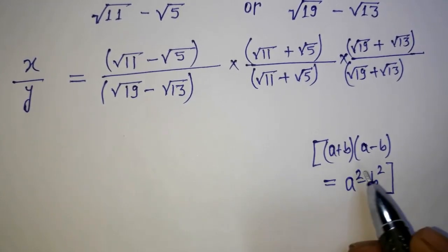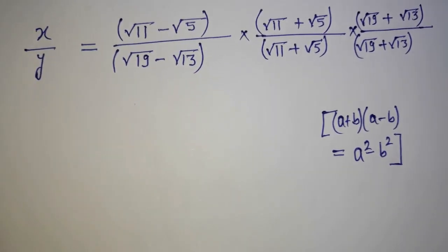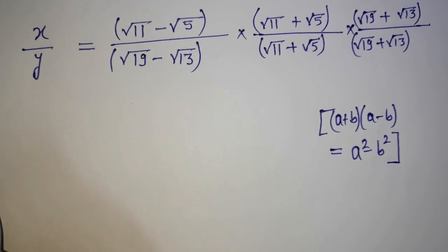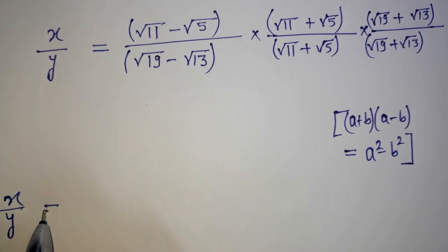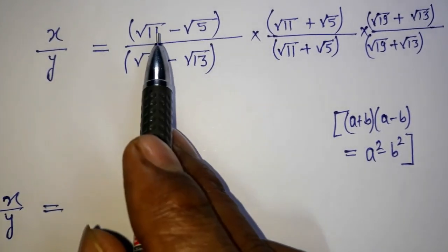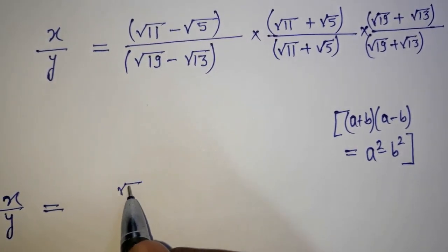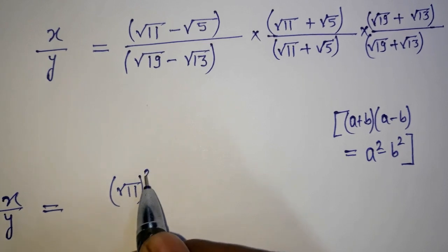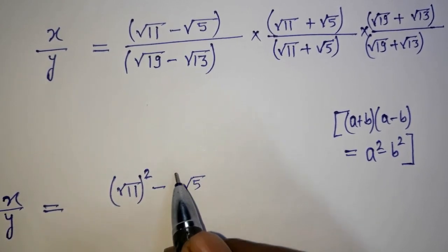So this formula I am going to use here. It becomes x upon y, equal to — this is going to multiply here, so it is root 11 squared minus root 5 squared.